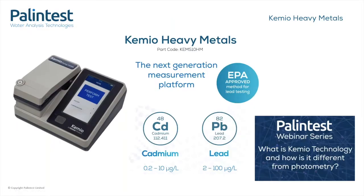Chemio Heavy Metals is Palin Test's newest sensor instrument and uses our patented sensor technology to analyse water for the presence of heavy metals. It's an EPA approved method for testing lead and can be used in field just as comfortably as it can be used in a lab setting. At the moment we have sensors available for the measurement of lead and cadmium, and our R&D department is constantly increasing the sensor range we have here at Palin Test.